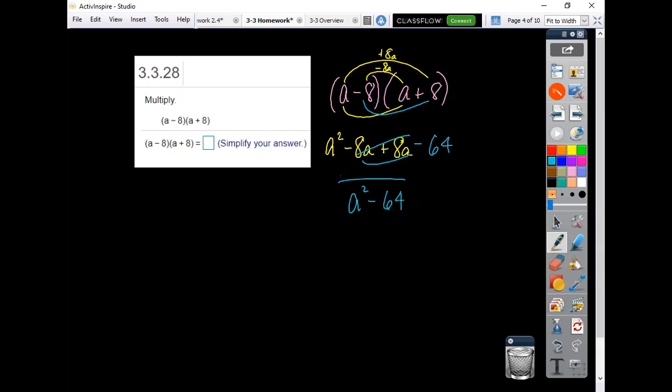So when you have a difference of two squares, it always factors this way. When you're solving that problem, I'd prefer you just jump straight to the answer a squared minus 64, knowing that those middle terms are going to cancel out for a faster method.